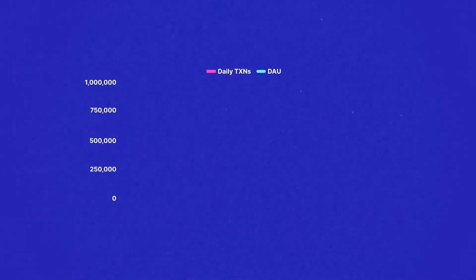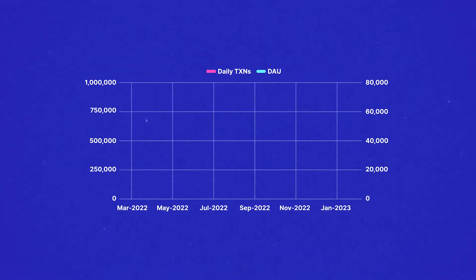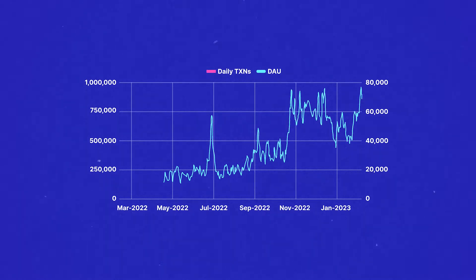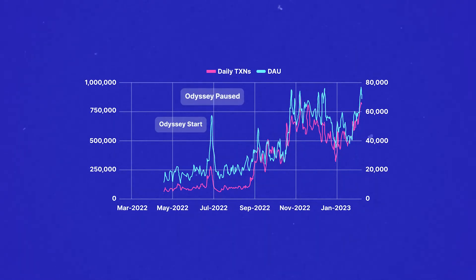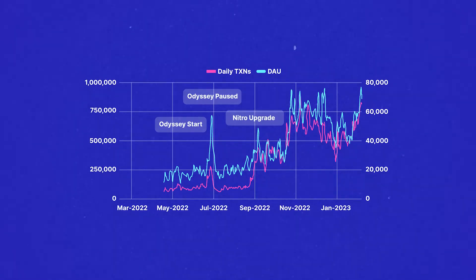Both protocols are on a long-term upward trajectory for chain activity and show no signs of slowing down. Regarding key growth drivers, Arbitrum benefited mainly from its Odyssey NFT series and the Nitra upgrade before the airdrop. Activity spiked during Odyssey as users were collecting NFTs, which may have been more useful for a potential later airdrop. Still, after Odyssey and the Nitra upgrade, daily active users were permanently higher than before.